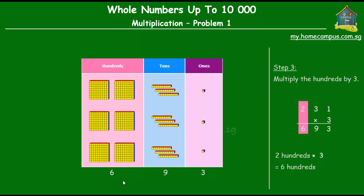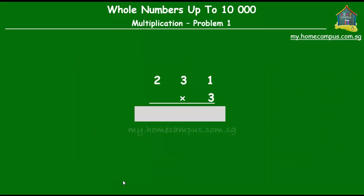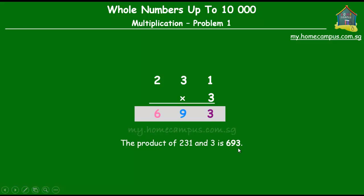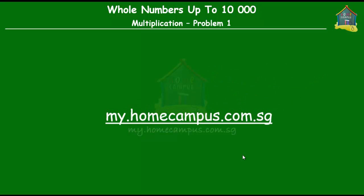Let's summarize the steps one more time. Two hundred and thirty-one times three: first, multiply the ones by three — one times three gives us three. Next, multiply the tens by three — three tens times three is nine tens. Finally, two hundreds times three is six hundreds. So the product of 231 and 3 is six hundred and ninety-three.